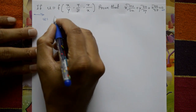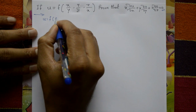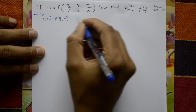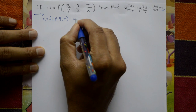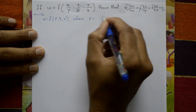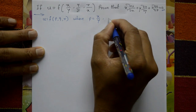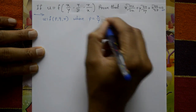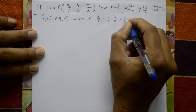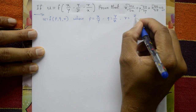u is equal to f of p, q, r. We let p equal to the first one, x by y; q is the second one, y by z; and r means the third one, z by x.